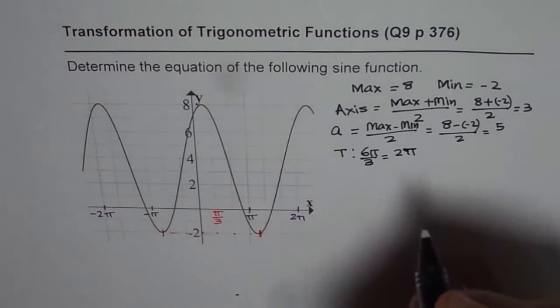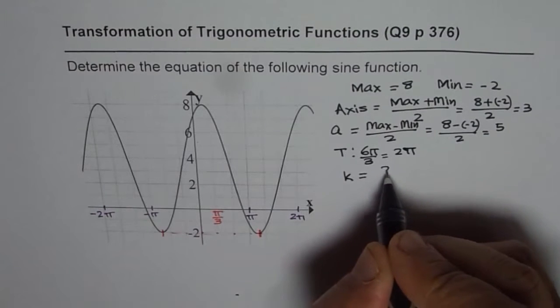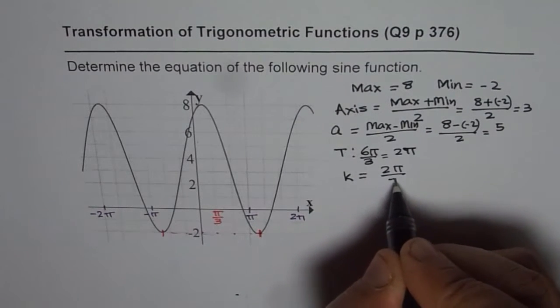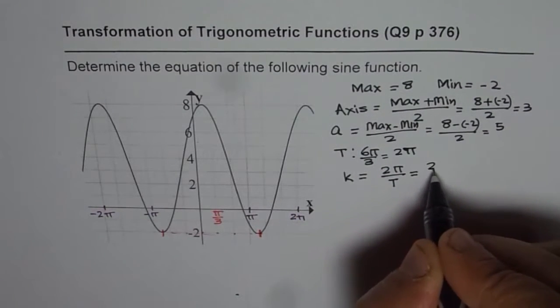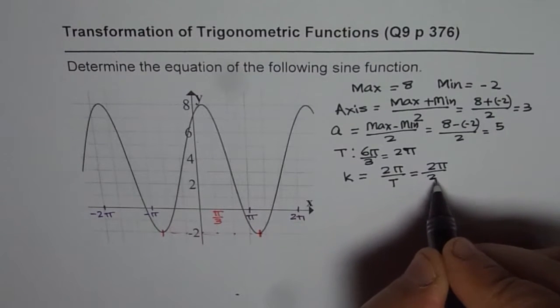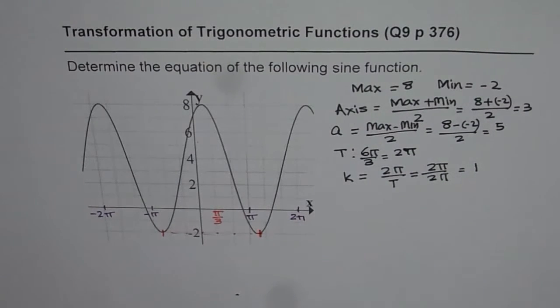Since time period is 2π, we know the value of k, which is 2π by T. So in this case, it is 2π by 2π, which is 1.